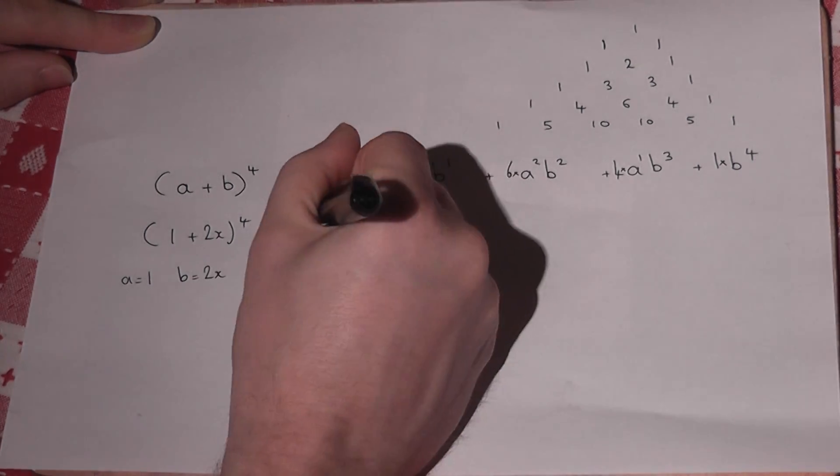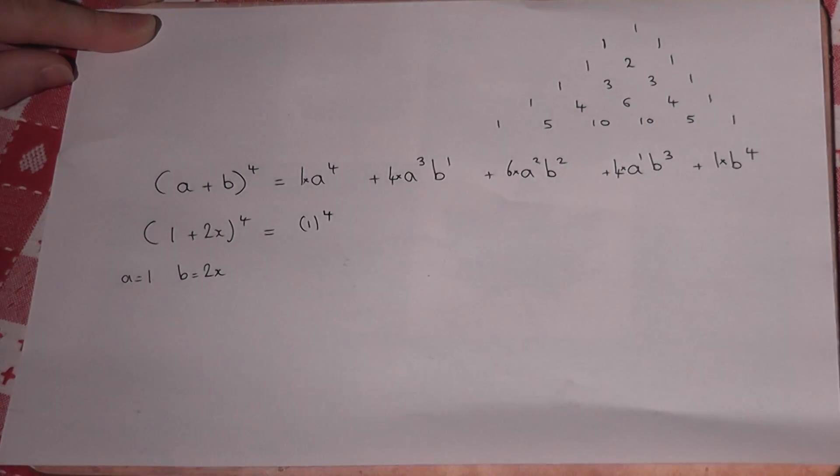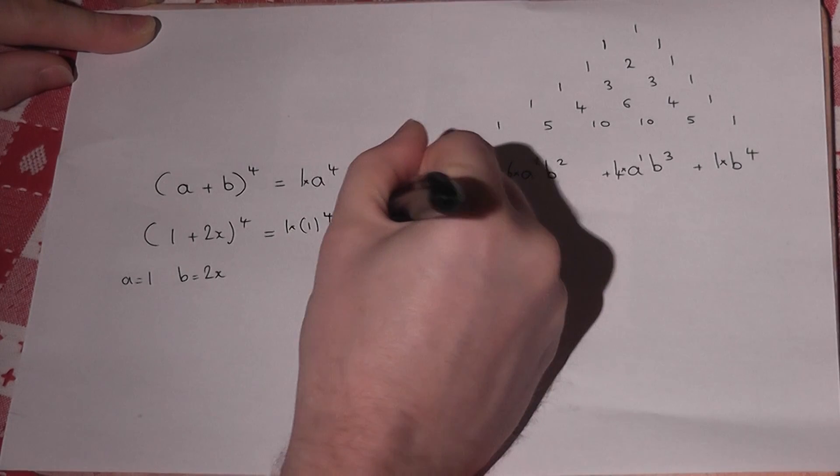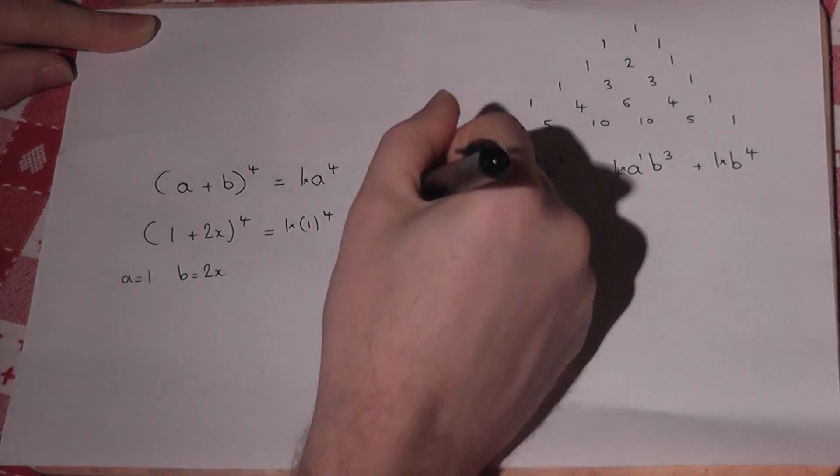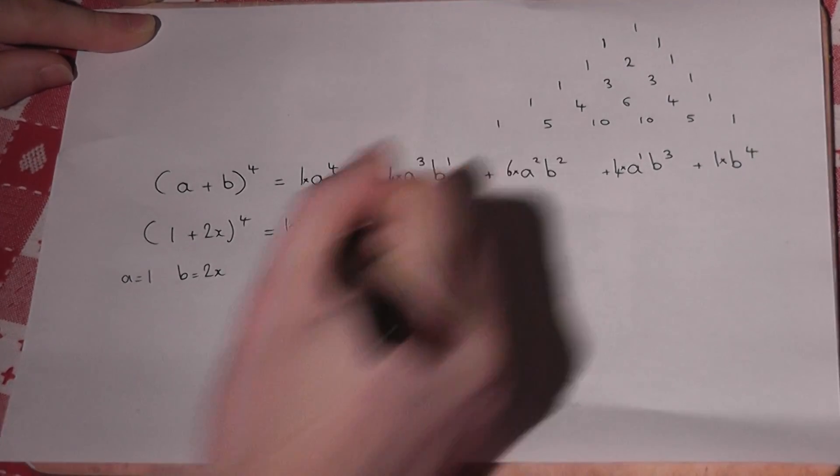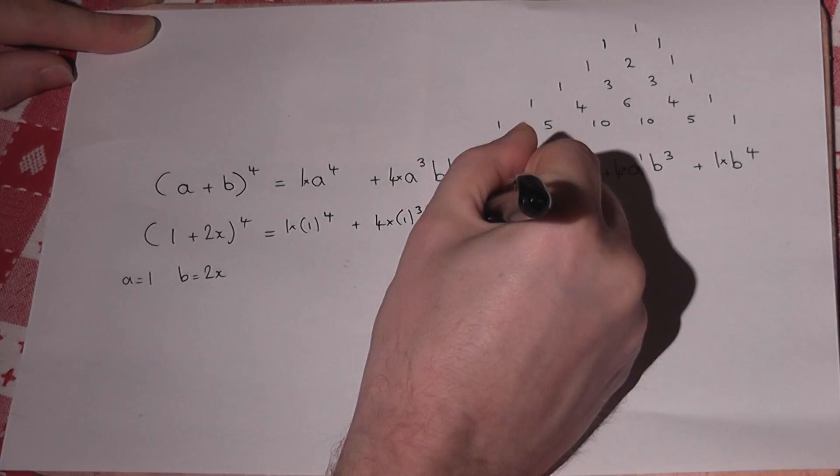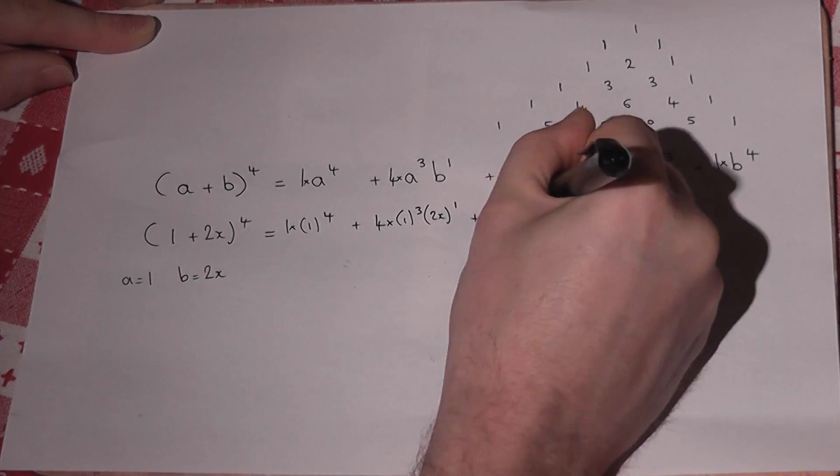So a is 1, 1 to the power of 4, 1 times it. Then 4 lots of 1^3 and b is 2x, so 2x to the power of 1. Then 6, 1^2.